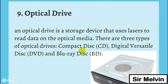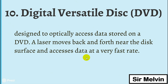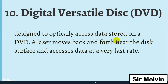Number nine is the optical drive — a storage device that uses lasers to read and write data on optical media. There are three types: CD (compact disc), DVD (digital versatile disc), and BD (Blu-ray disc). The DVD drive uses a laser that moves back and forth near the disc surface to access data at a very fast rate, and you can also store data resources on a DVD.